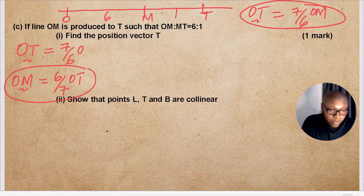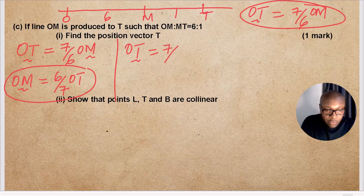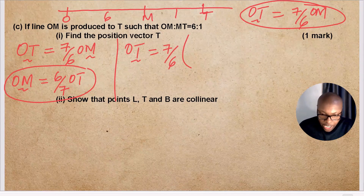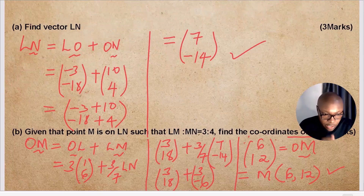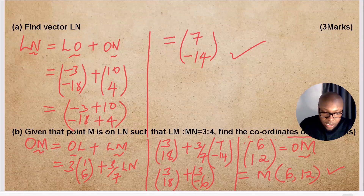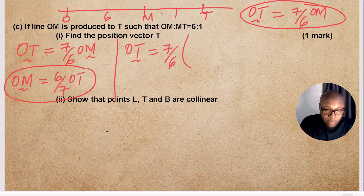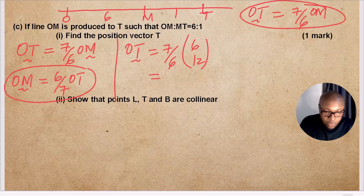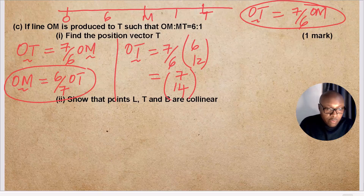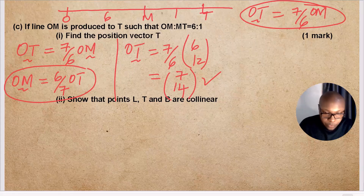OT = (7/6) × OM. We already have OM = (6, 12). So (7/6)×6 = 7 and (7/6)×12 = 14. Therefore the position vector of T is (7, 14).